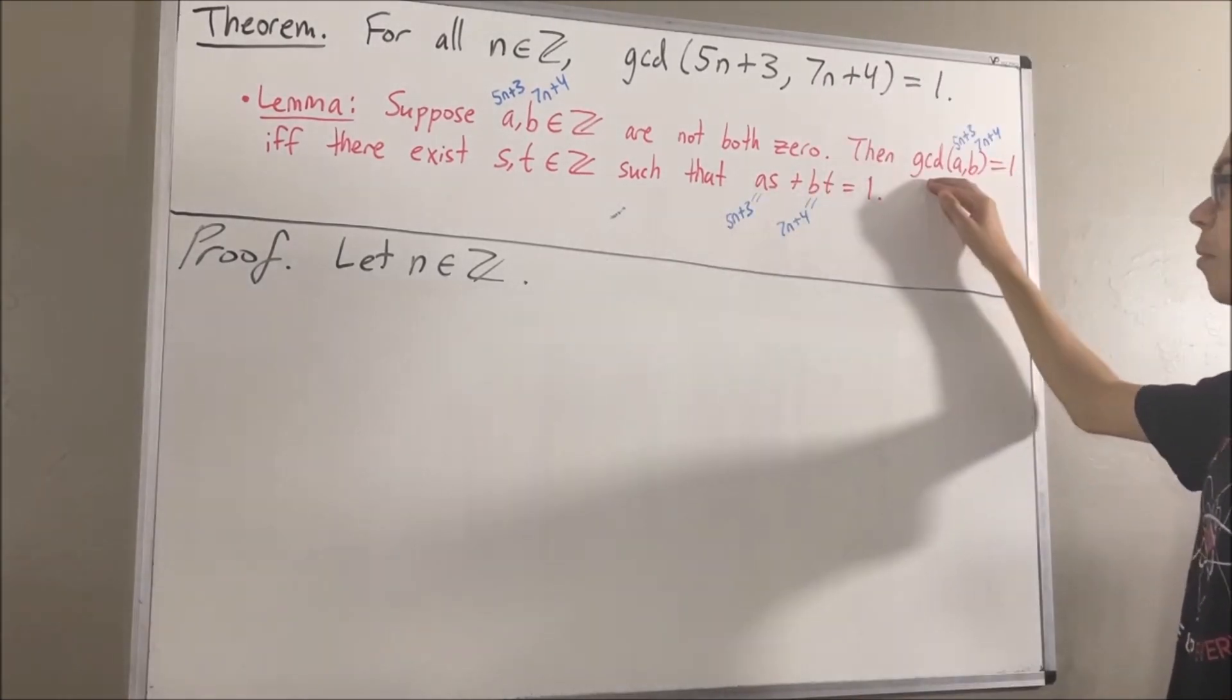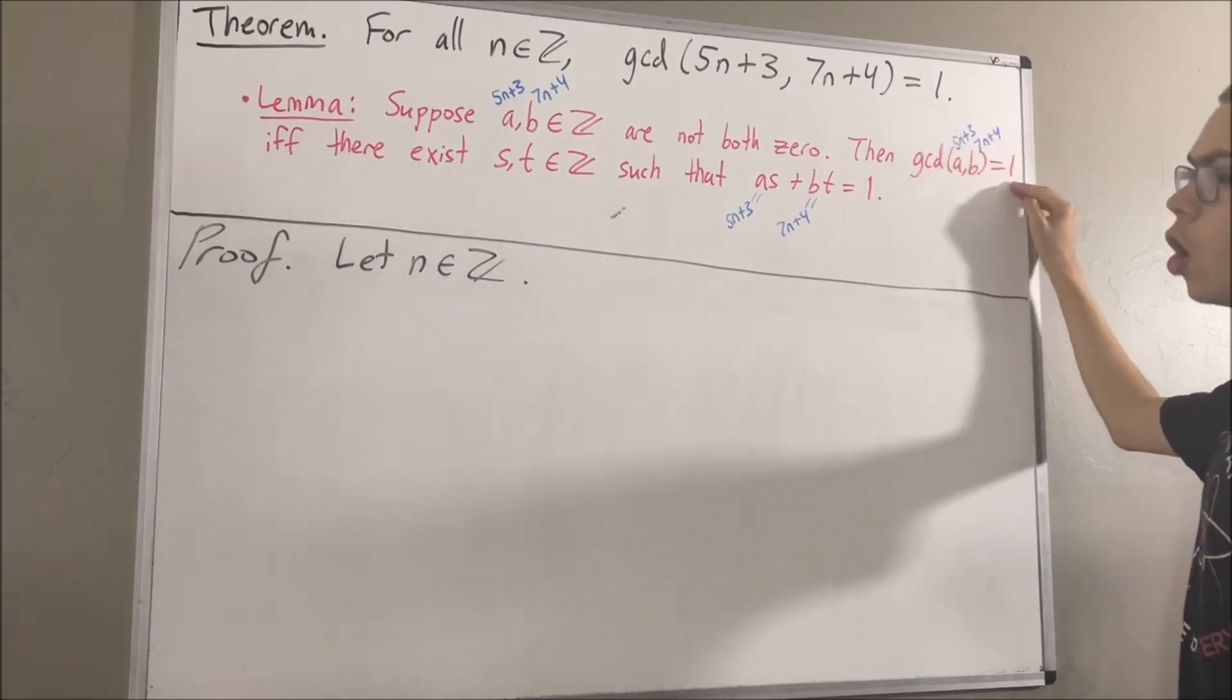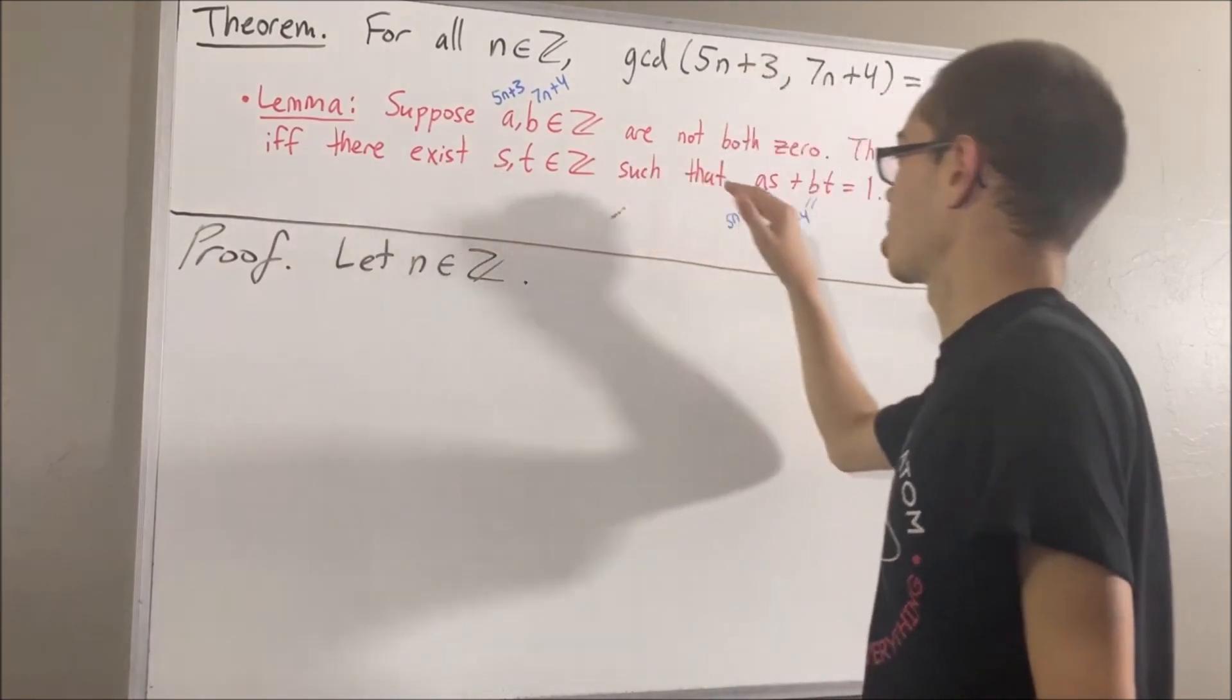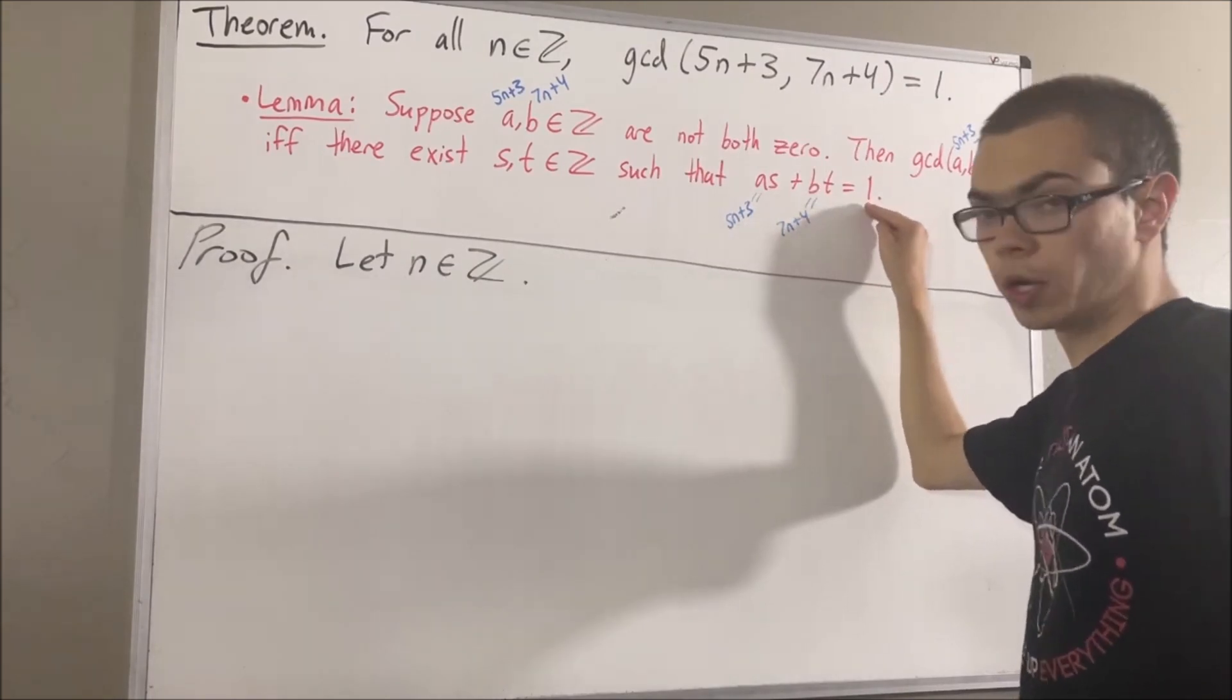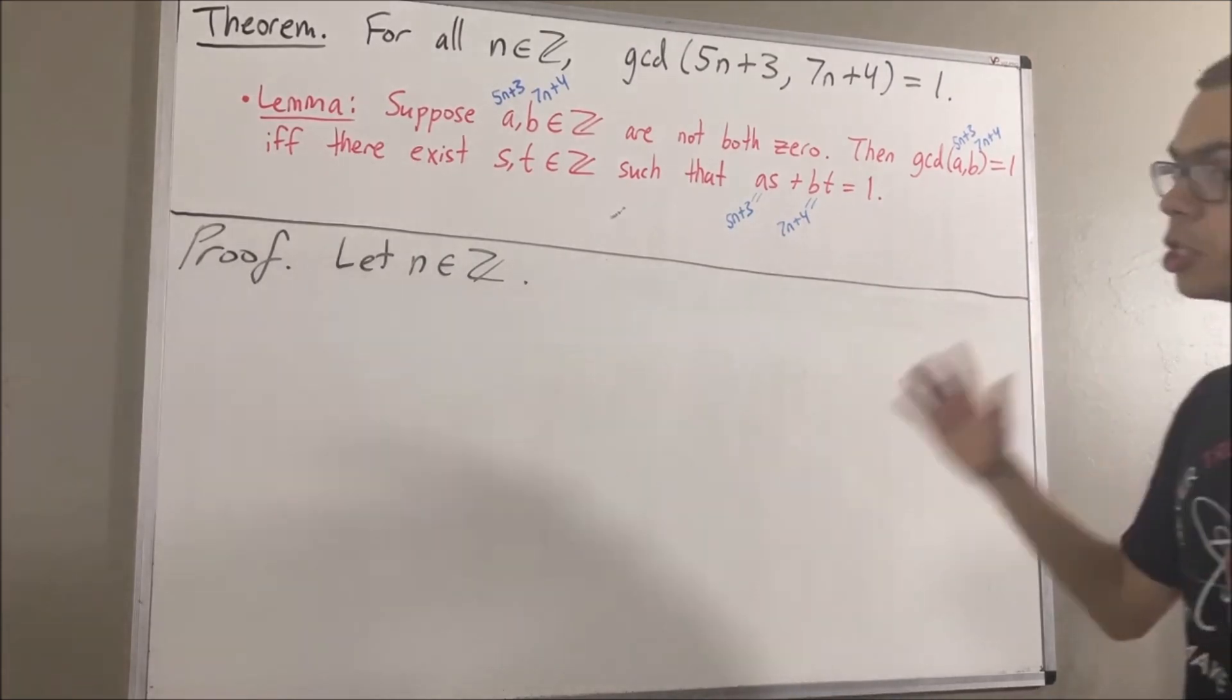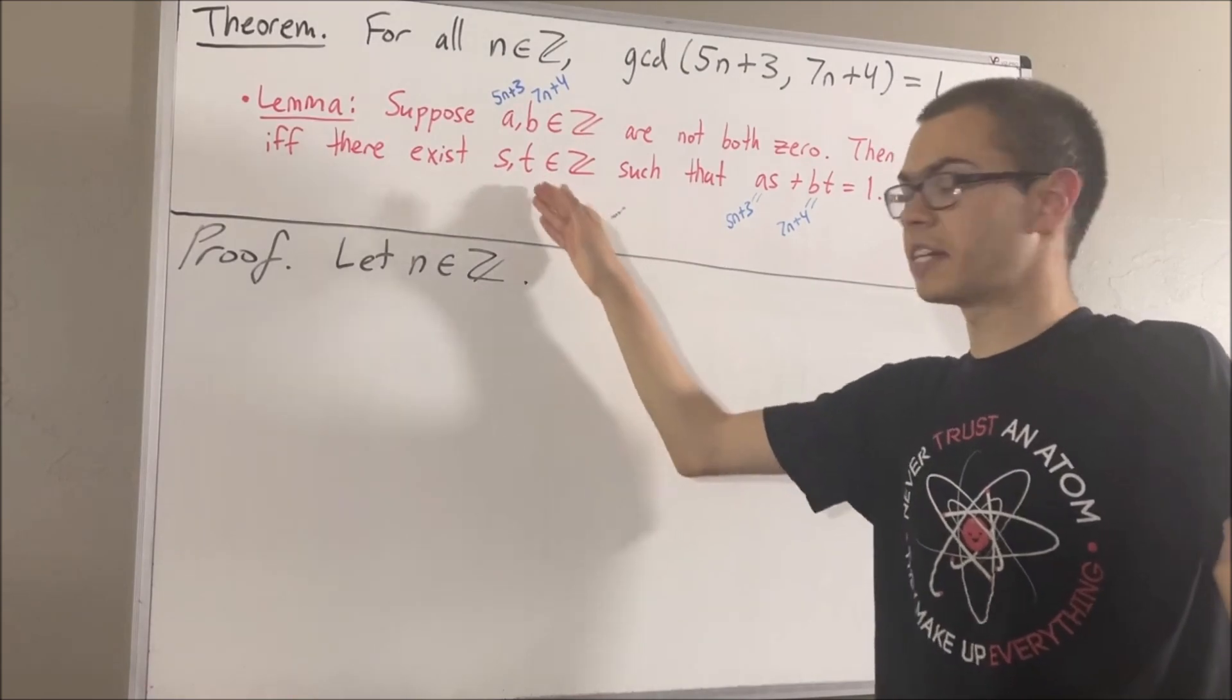And to show that the greatest common divisor of 5n plus 3 and 7n plus 4 is equal to 1, all we got to do is show that there are integers s and t such that 5n plus 3 times s plus 7n plus 4 times t is equal to 1. But from our scratch work, we already know what to choose s and t to be. We'll take s to be 7 and t to be negative 5.